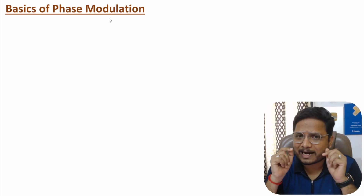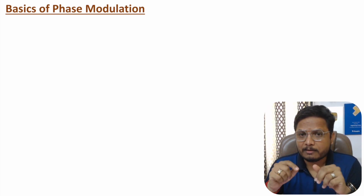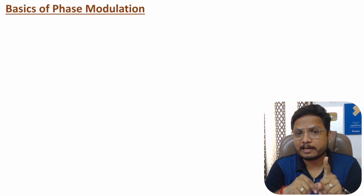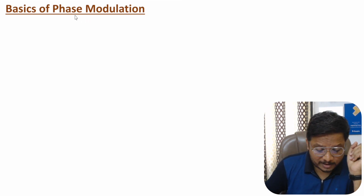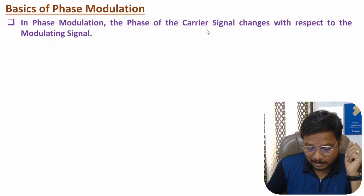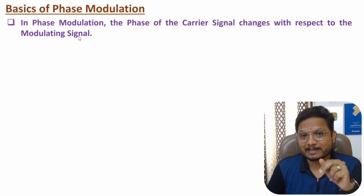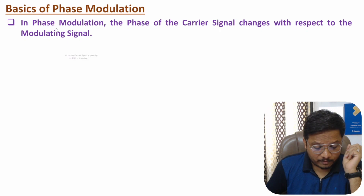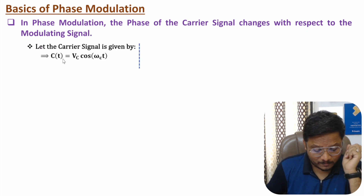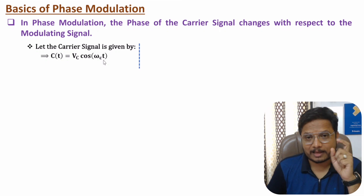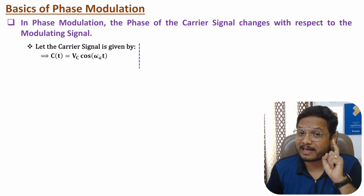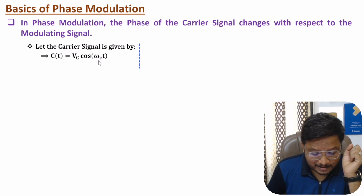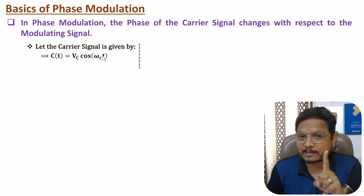Phase modulation is a category of angle modulation. In phase modulation, we change the phase of the carrier signal with respect to the message signal. If you have a carrier signal vc·cos(ωc·t), then ωc is the frequency of the carrier signal and the phase of this carrier signal is ωc·t.